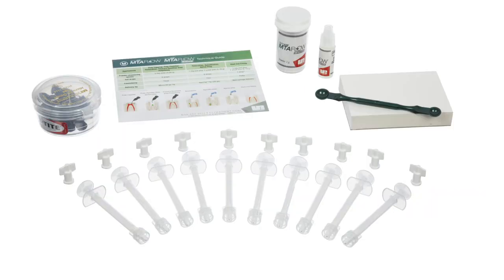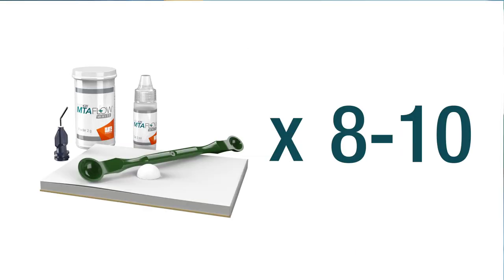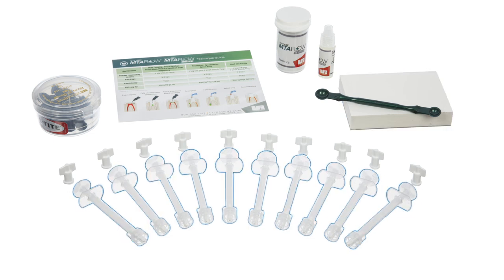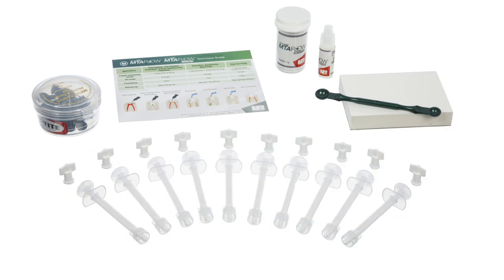The MTA Flow kit also includes the essential tools needed to mix and deliver the cement. The kit contains enough MTA powder and gel to complete 8 to 10 applications. The kit also includes a measuring spoon, mixing pad, 10 skinny syringes, 10 lure lock caps, and 20 black micro tips.